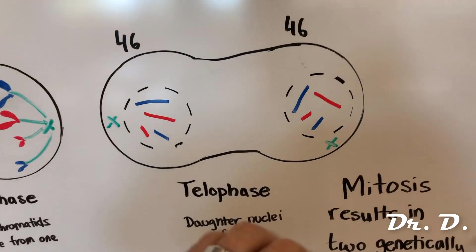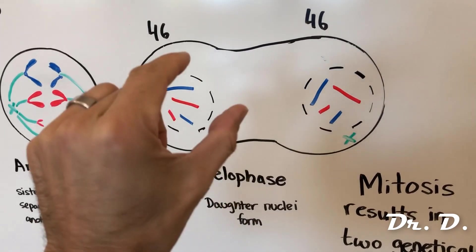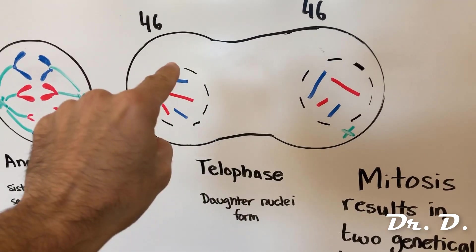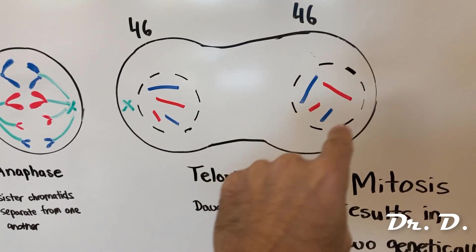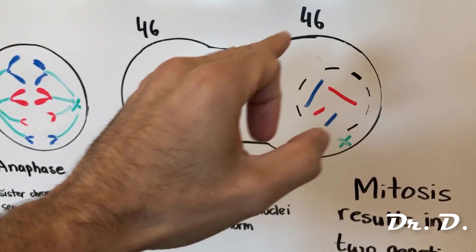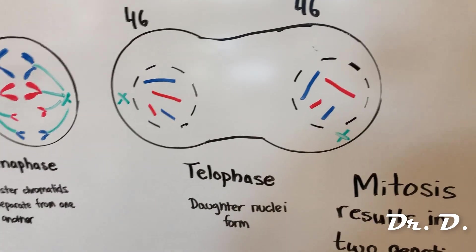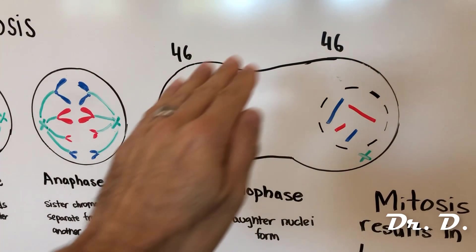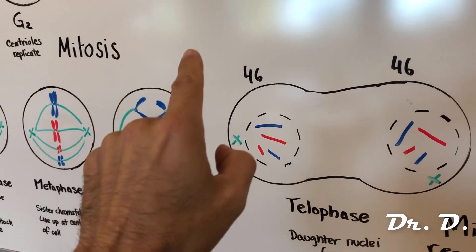In the final phase, telophase, you now have two cells with 46 chromosomes each. New nuclear envelopes start to form, so a daughter nucleus forms on each side. Cytokinesis can start during telophase, but it is not part of mitosis — it is concurrent with mitosis, with some overlap.